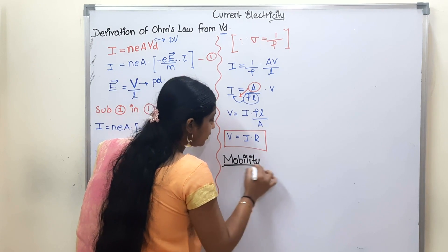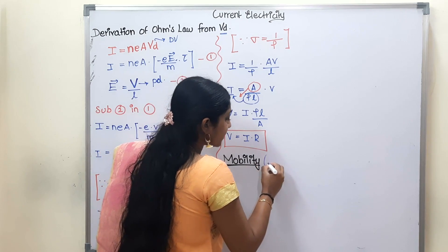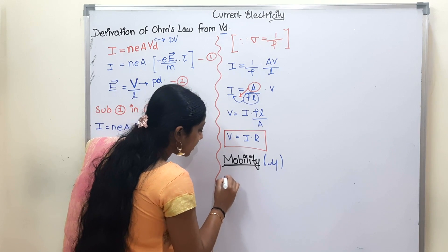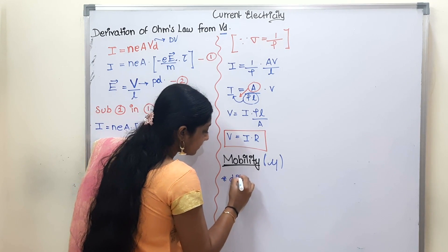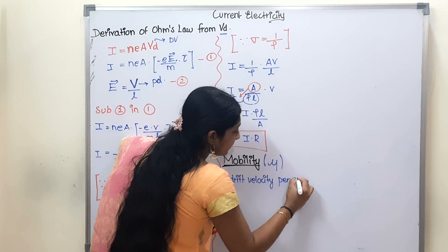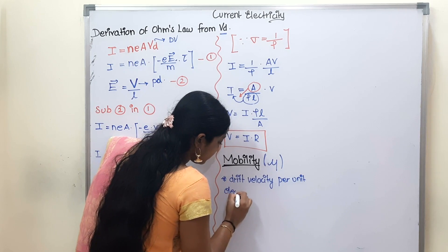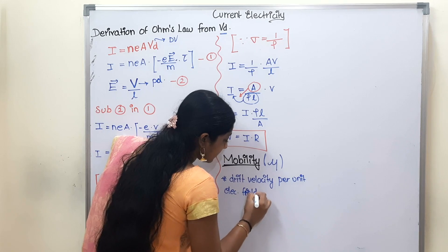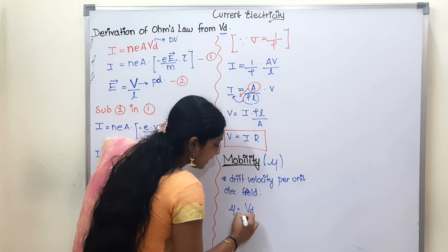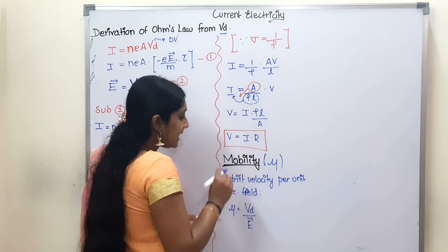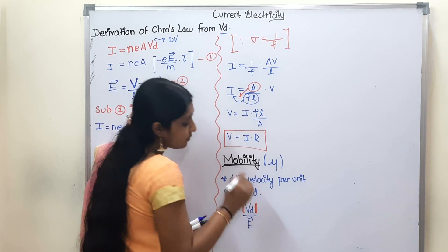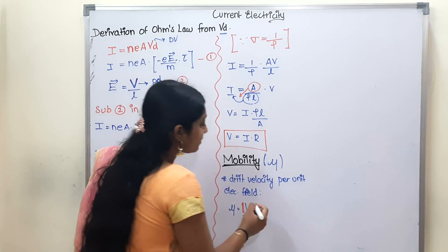Mobility is a small topic. Mobility represents nothing new. The symbol for mobility is mu. Mobility means drift velocity per unit electric field. So mu equals Vd divided by E. Make sure to use the magnitude of drift velocity.